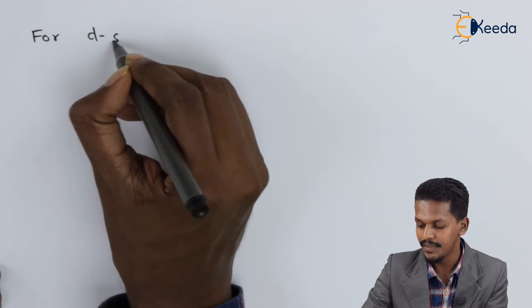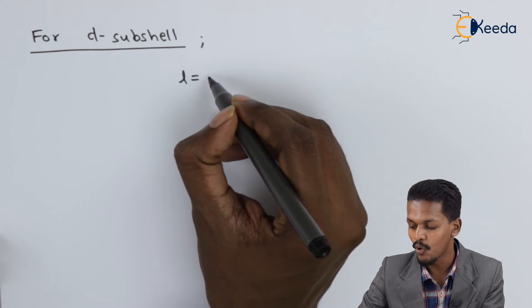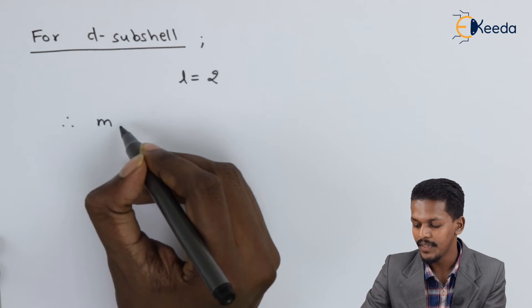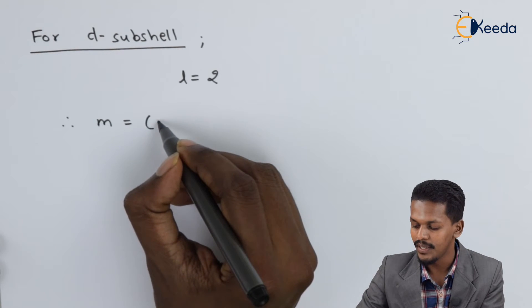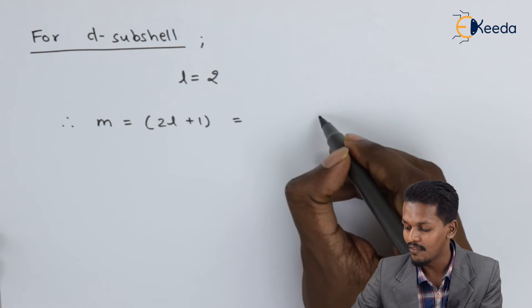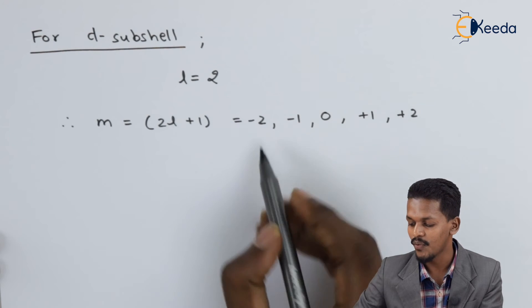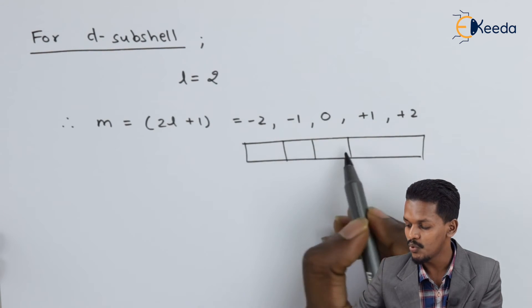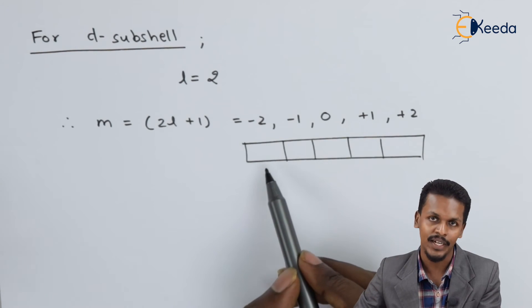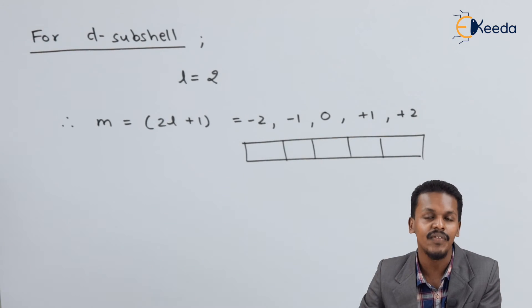Now let's talk about the D sub-shell. The azimuthal quantum number for D is L = 2. So the magnetic quantum number M = 2L + 1 = 2×2 + 1 = 5. Therefore there are five values: 0, +1, +2, −1, and −2 — meaning five magnetic quantum numbers and five orbitals. Each orbital can occupy two electrons.